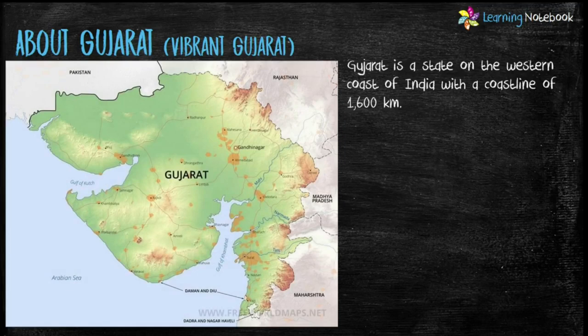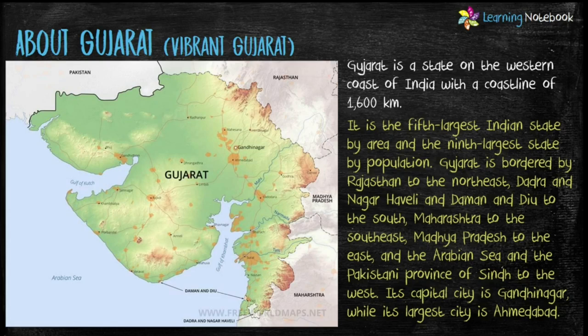Gujarat is a state on the western coast of India with a coastline of 1600 kilometres. It is the fifth largest Indian state by area and the ninth largest state by population. The capital city of Gujarat is Gandhinagar, while its largest city is Ahmedabad.